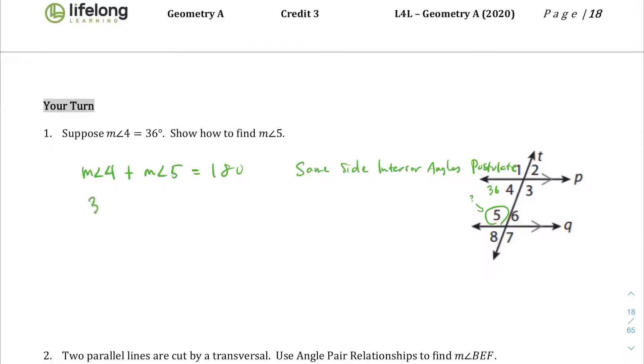Since you know that the measure of angle 4 is 36 plus measure of angle 5 equals 180, well, we substitute 36 for measure of angle 4. That was substitution property. If we subtract 36 from both sides, you will end up with measure of angle 5 equals 144, which is a subtraction property of equality.